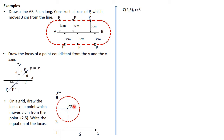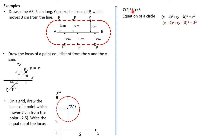The circle center is (2, 5) and the radius is three. The equation of a circle is given by (x − a)² + (y − b)² = r². With a = 2, b = 5, and r = 3, substituting gives the equation (x − 2)² + (y − 5)² = 9, and we are done.